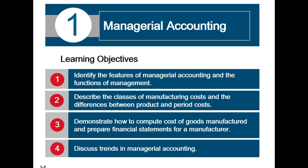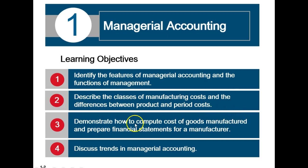Managers want very different information — significantly different than external users — because they're getting this information to allow their job to be performed as best as it can. The objectives for this chapter include why we have managerial accounting, various classifications of manufacturing costs, and how we come up with what we call the cost of goods manufactured. We are not going to cover Objective 4.